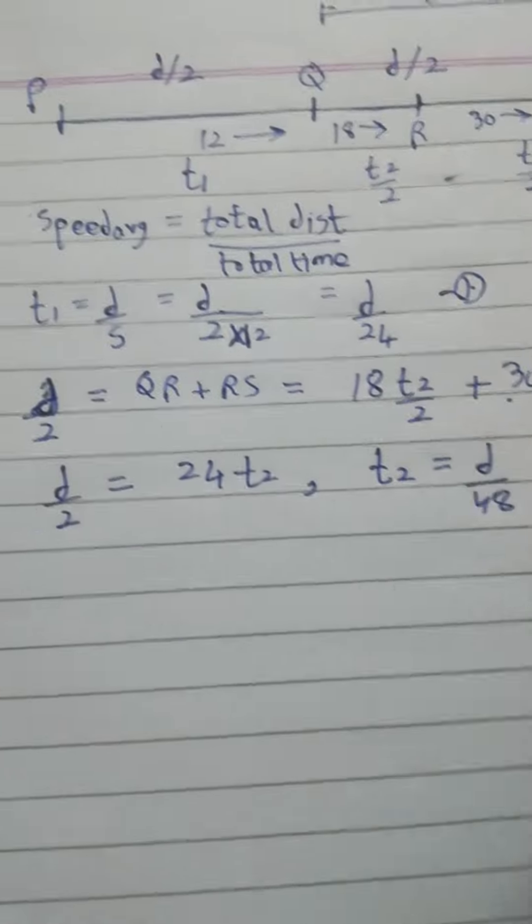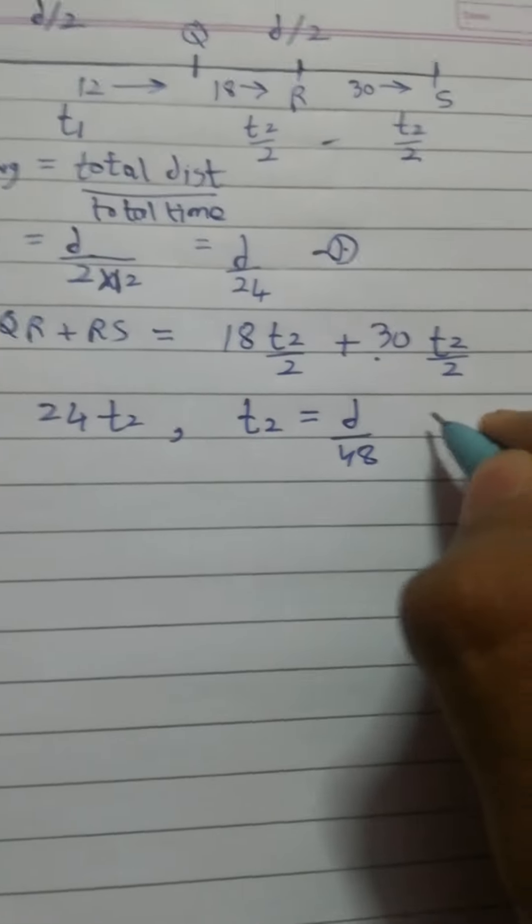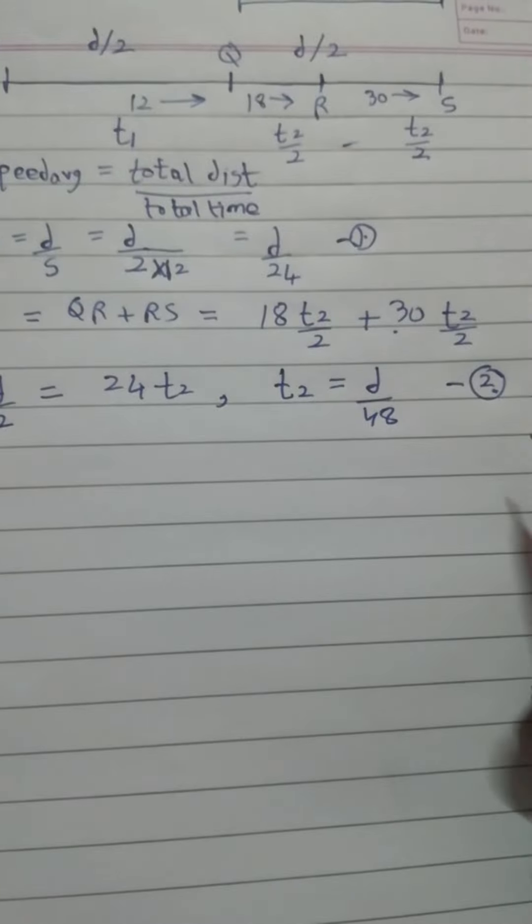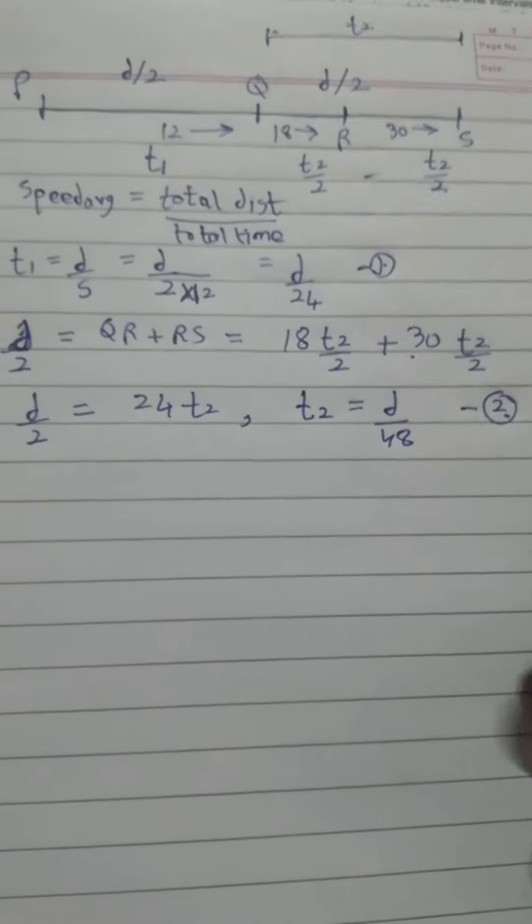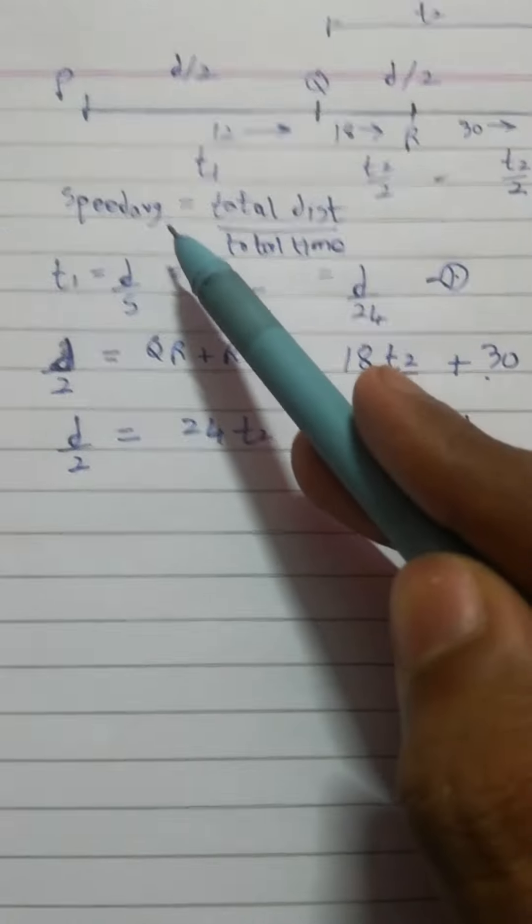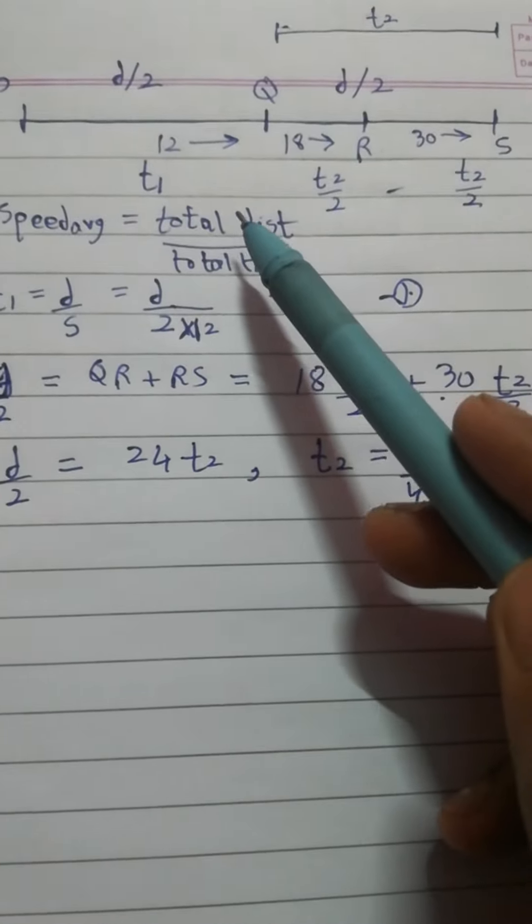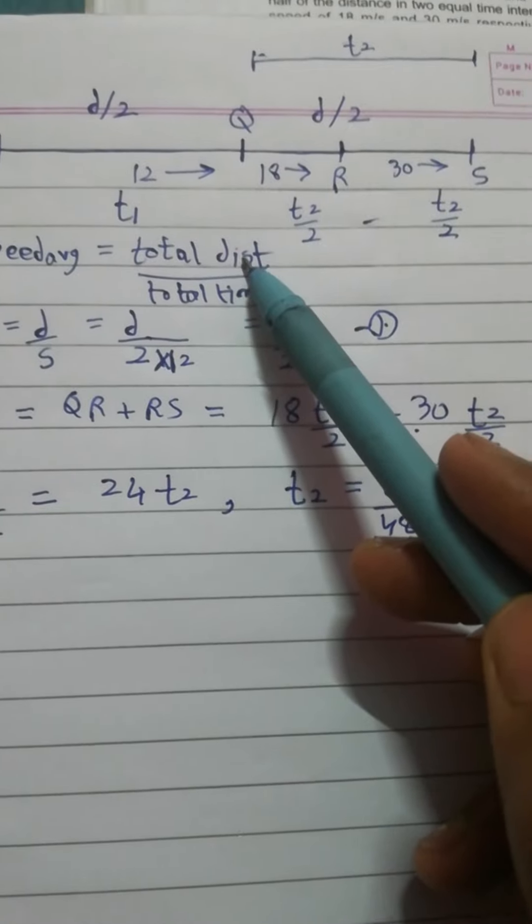Now this is our second statement. Now that's what we have already got the answer. Just put it in speed average. We know average speed is total distance upon total time. We have considered total distance to be D.